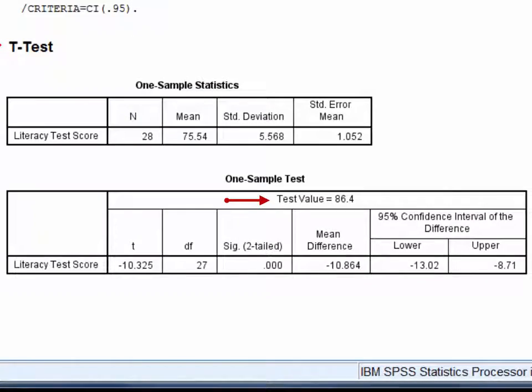At the top of the second table, the test value of 86.4 is displayed. This is the value that we are comparing the sample mean with. Always check that this figure is correct before reading the rest of the table.